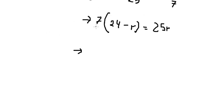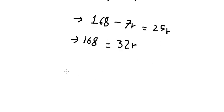7 multiplied by this one gives us 168 minus 7r equals 25r. I'll put this on the other side and we have 25r plus 7r, which is 32r. We divide both sides by 32.